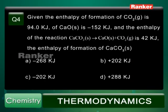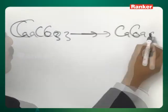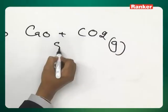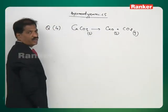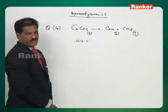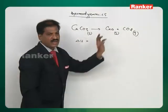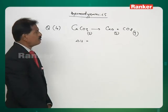Question number 4. Given enthalpy of formation of CO2 is minus 94 kilojoules, CaO is minus 152 kilojoules, and enthalpy of reaction CaCO3 → CaO + CO2 is 42 kilojoules. Find the enthalpy of formation of CaCO3. The reaction is CaCO3(s) → CaO(s) + CO2(g). Enthalpy of formation values for CaO and CO2 are given, and we need the enthalpy of formation of CaCO3.